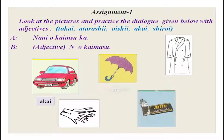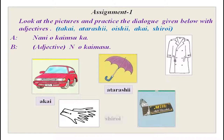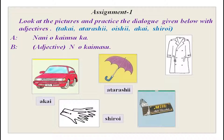The second one is atarashii, and the picture is kasa — an umbrella. So atarashii kasa wo kaimasu. Now the third one is tebukuro — tebukuro is gloves — and it is shiroi. So shiroi tebukuro wo kaimasu. Now you have a coat — kouto — and you have takai which is expensive. So nani wo kaimasu ka? Takai kouto wo kaimasu.